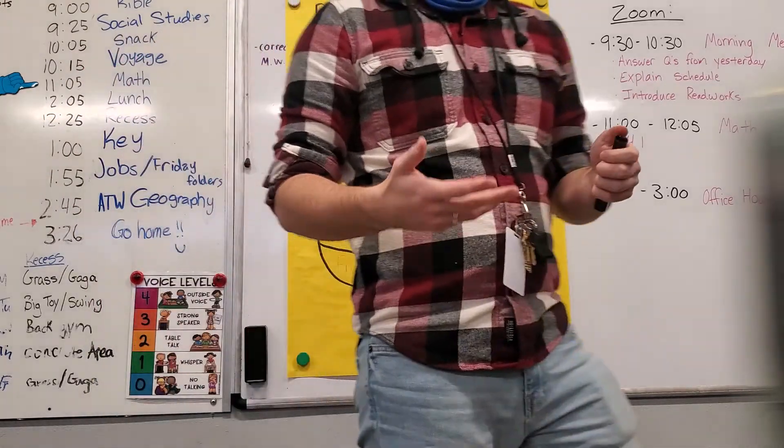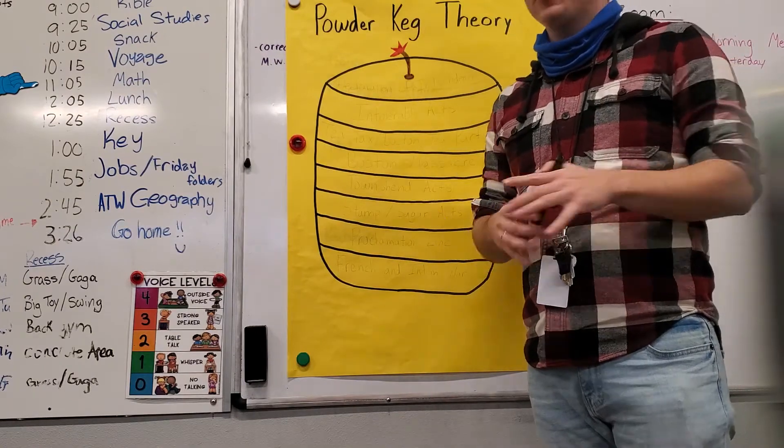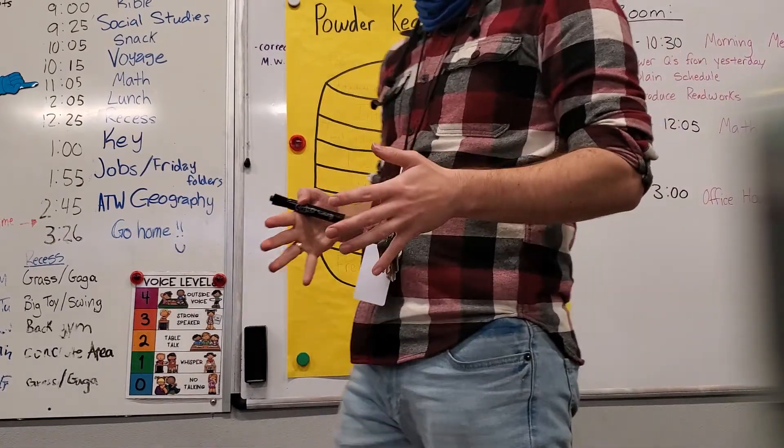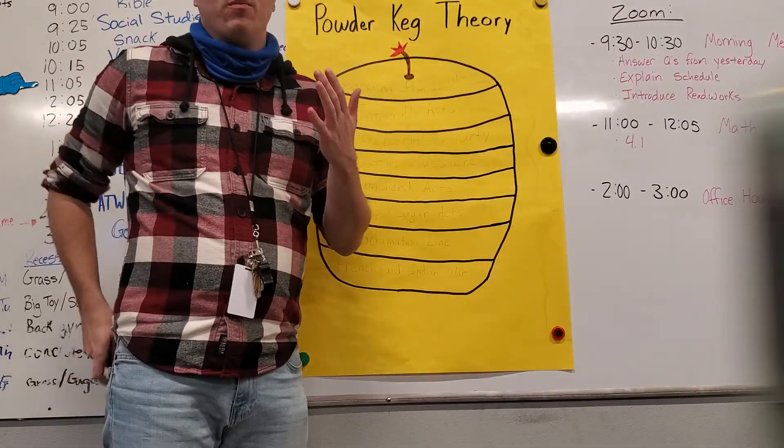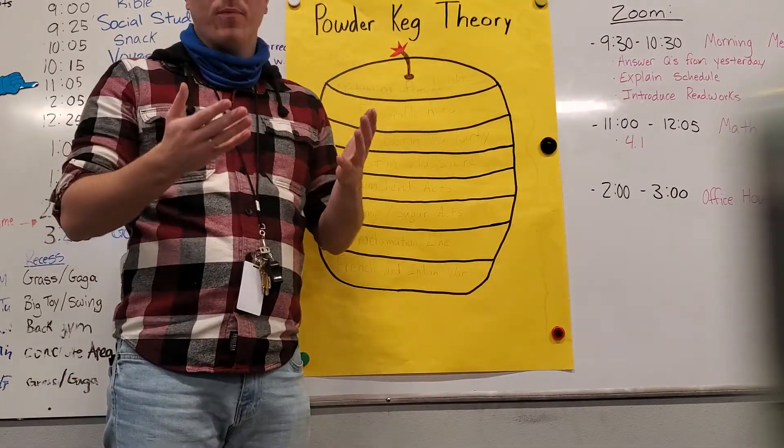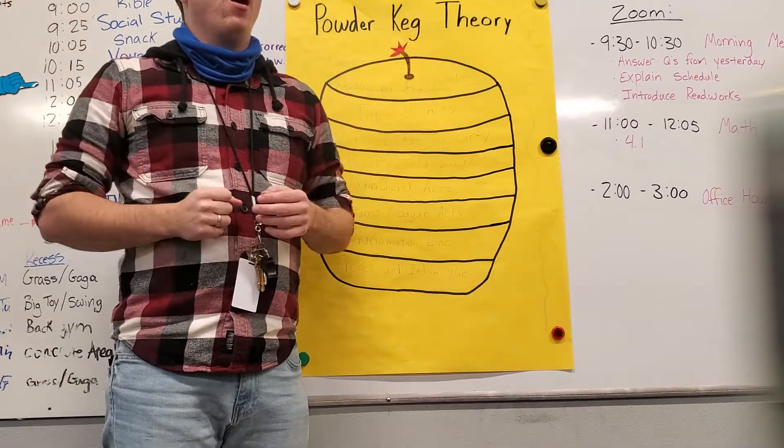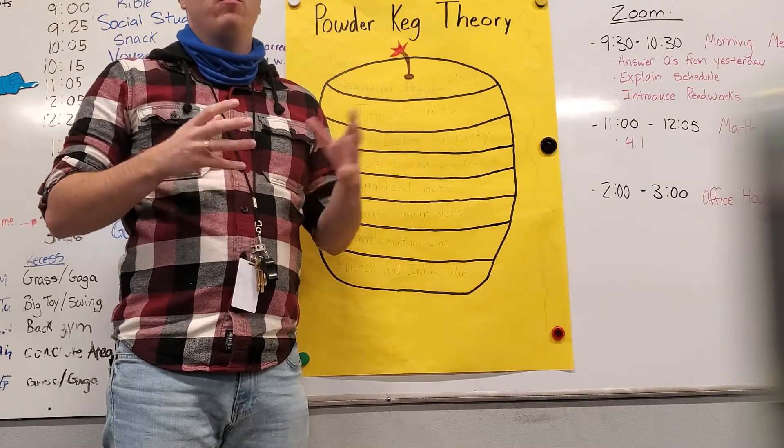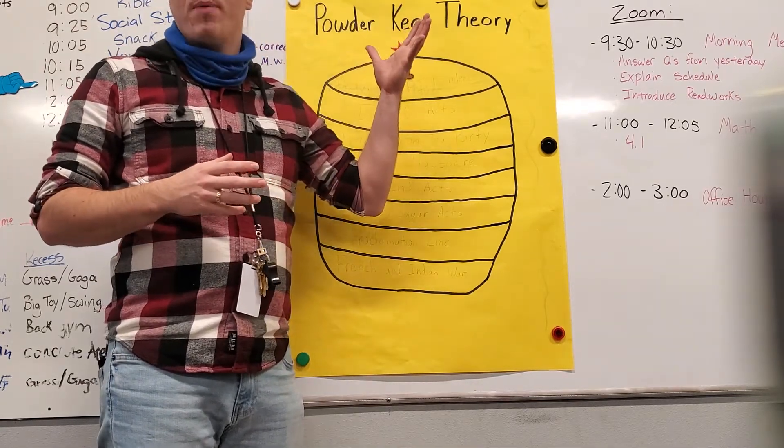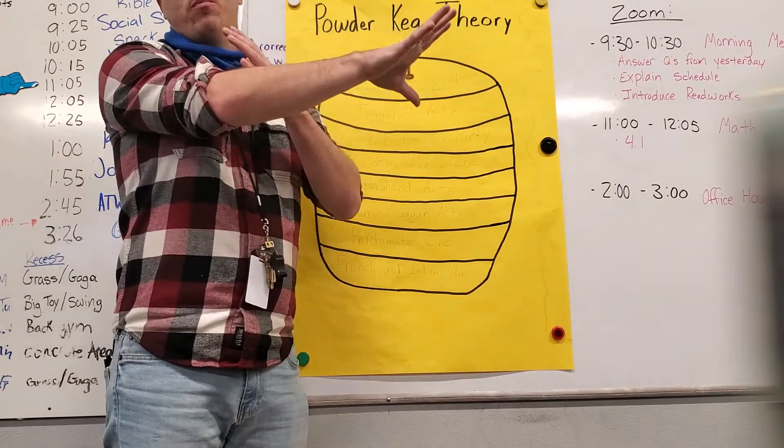So a powder keg is what they would use in colonial times to store gunpowder. Because at that time, their muskets, which was their primary weapon that they would use, requires powder in order to fire a bullet. That's what makes that explosion. If you've ever seen old-school muskets when they fire, they have that explosion. And that's this powder, this gunpowder that is coming out of the gun which creates that force that needs to shoot the bullet out.